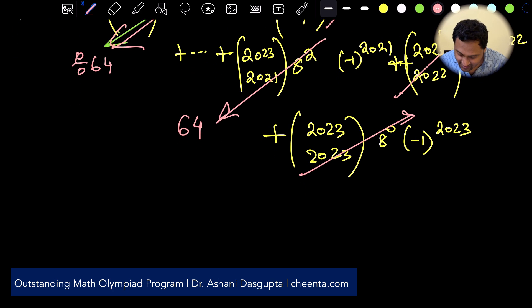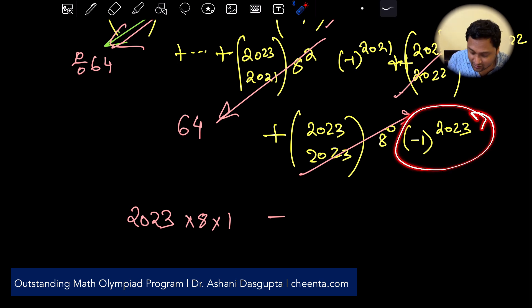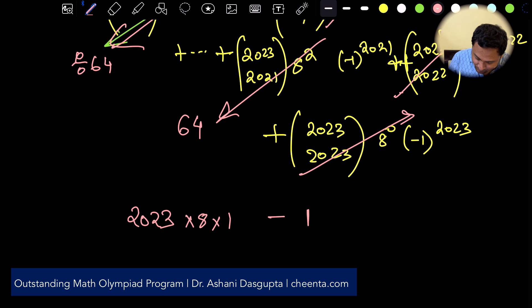2023 choose 2022 is 2023 times 8, minus 1 raised to 2022 is just 1 times 1. Minus, so this is an odd power of minus 1. 8 to the power 0 is 1 and 2023 choose 2023 is also 1 so this is just minus 1. That's all.